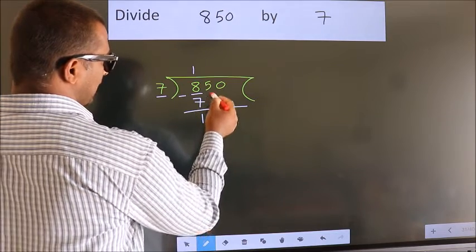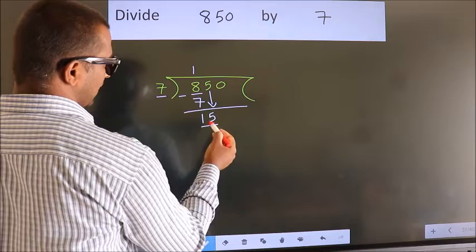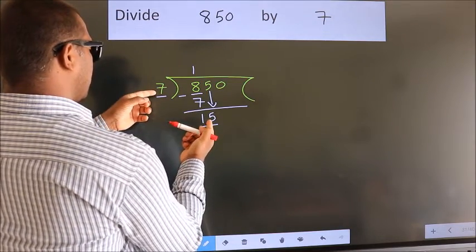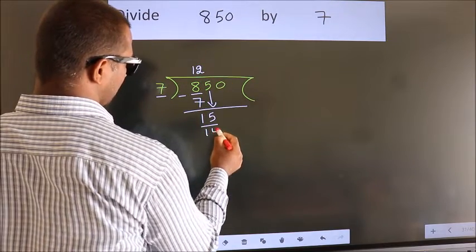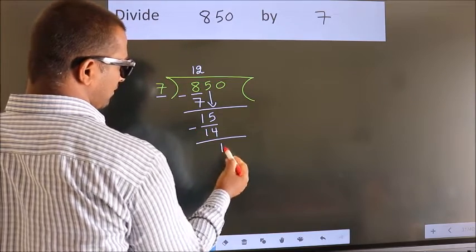After this, bring down the beside number. So 5 down. So 15. A number close to 15 in 7 table is 7 twos 14. Now we subtract. We get 1.